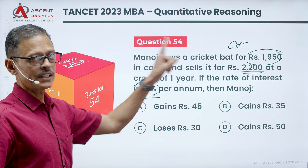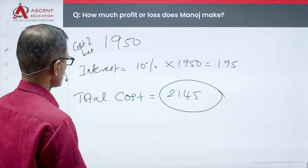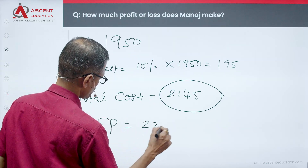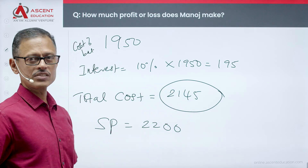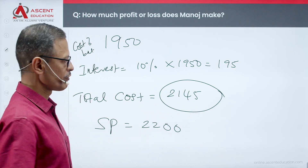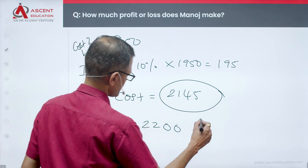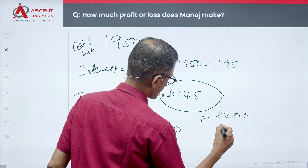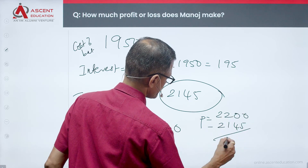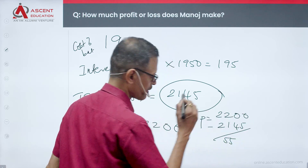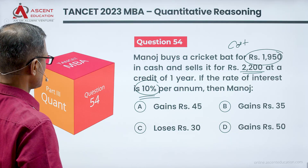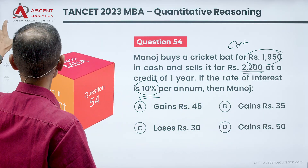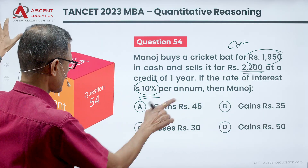He has sold the bat for ₹2200. So the selling price is ₹2200 and the total incurred cost is ₹2145. The profit made is equal to ₹2200 minus ₹2145, which equals ₹55. The answer option is D.